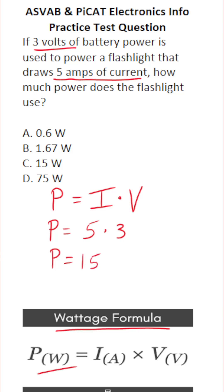Power is always given in terms of watts. So this flashlight uses fifteen watts of power, C.